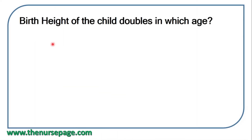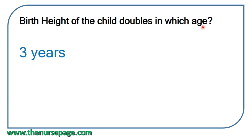Next question: birth height of a child doubles at which age? Correct answer: 3 years. Birth height of a baby doubles by age 3.